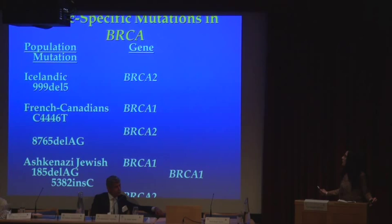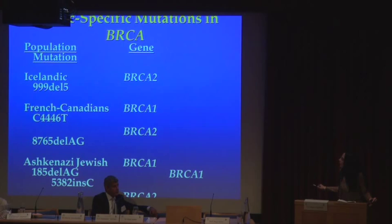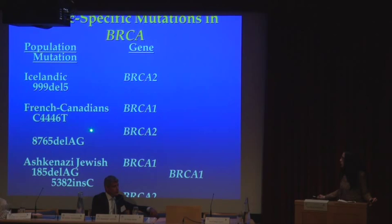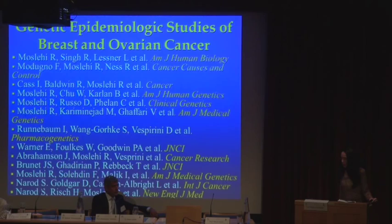Ethnic-specific mutations in the BRCA genes have also been identified. These are some of the populations in which mutations in BRCA1 and BRCA2 have been identified. The characteristics of ethnic-specific mutations are that they occur at a very high frequency in those populations and are unique in some cases to those populations. They include French-Canadian, Ashkenazi Jewish, Icelandic, and Dutch populations. We have conducted genetic epidemiologic studies on many populations and ethnic groups, the majority of which are in North America and Europe.